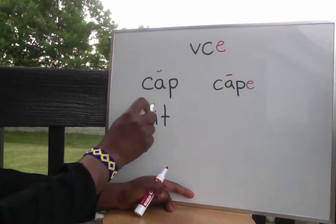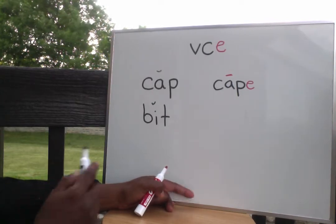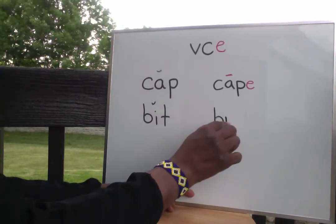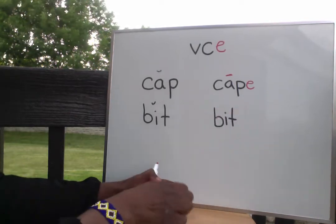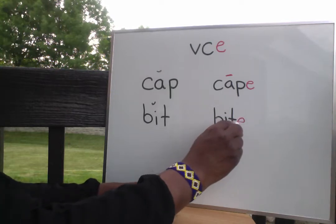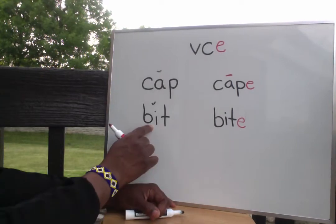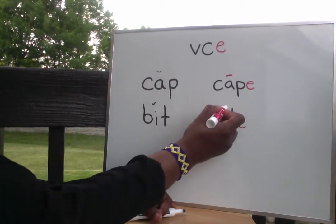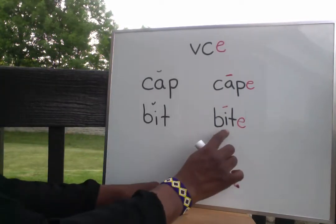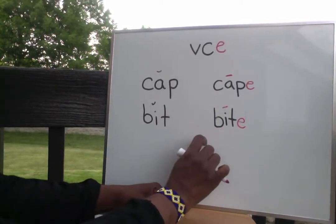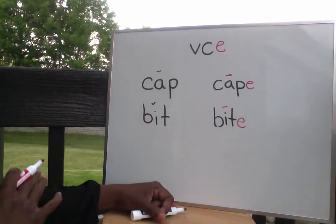Bit — short vowel sound. I, bit. But if I add an E to the end, this E makes my vowel change from a short vowel I to a long vowel sound. And remember, long vowels say the name of the letter, and that letter is called an I.